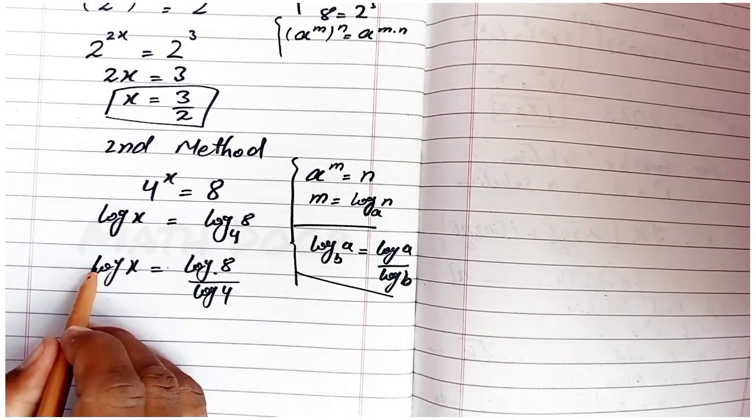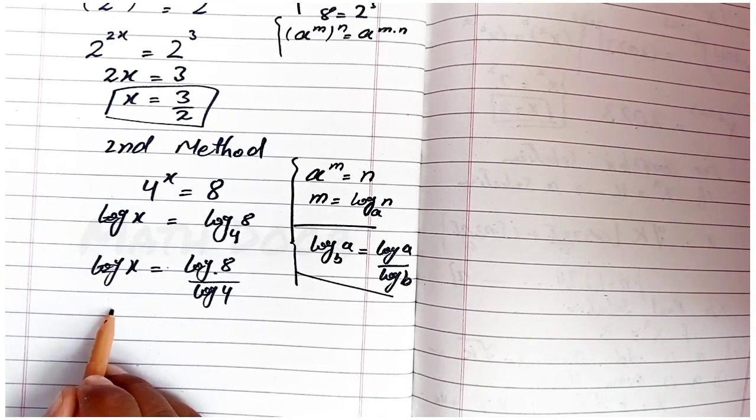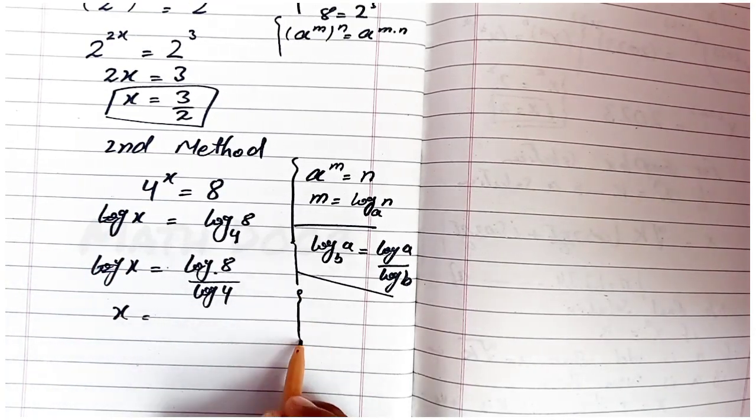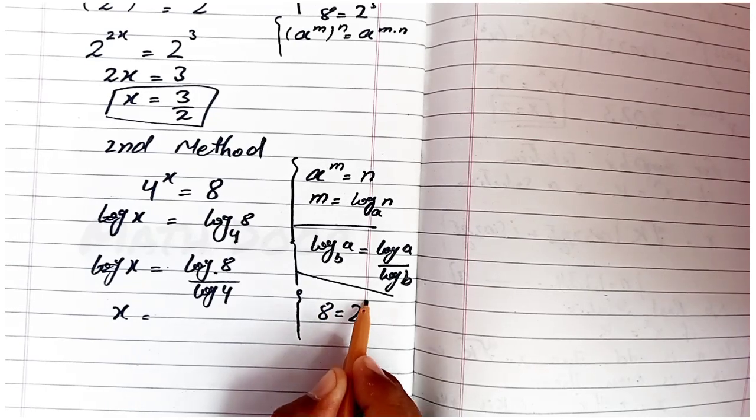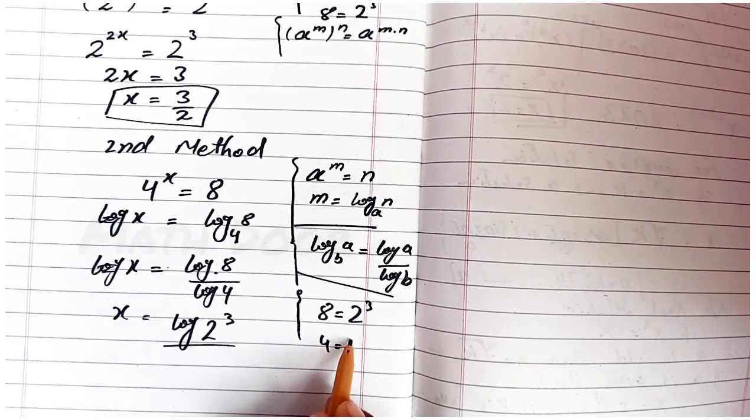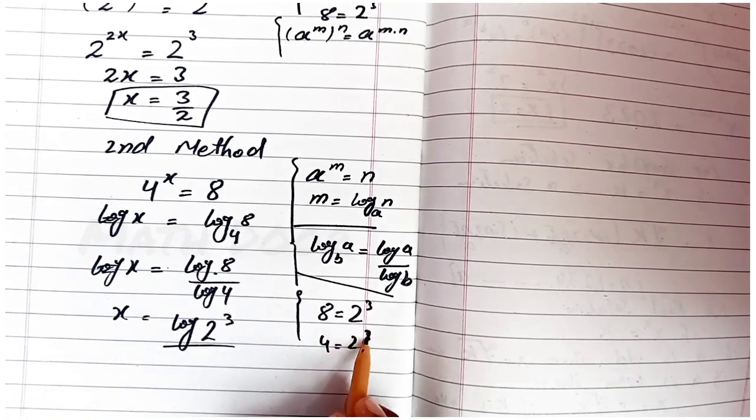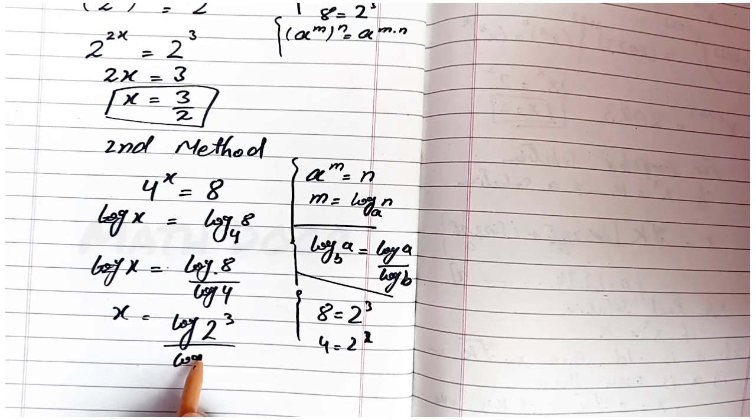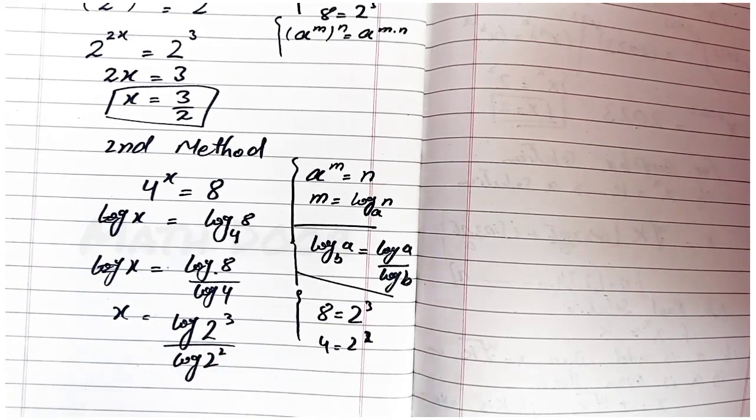Sorry, x has no log. So x equals: we write 8 as 2^3, so log(2^3), over 4 as 2^2, so log(2^2).